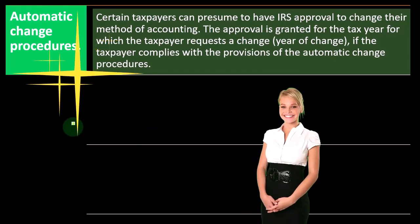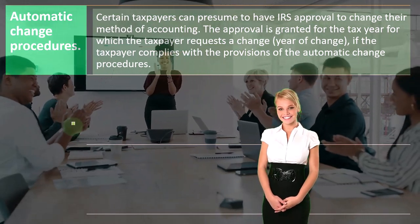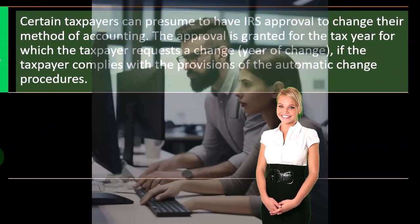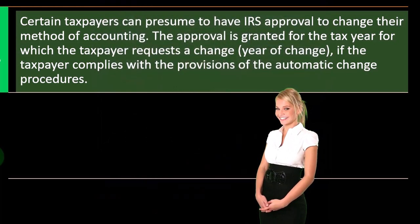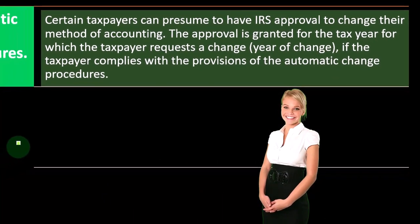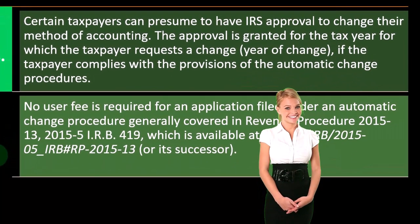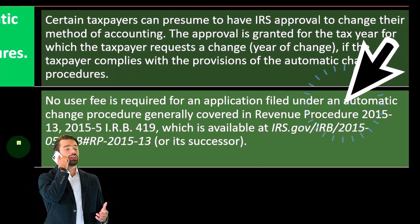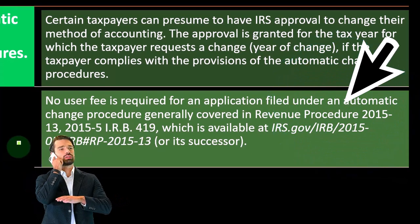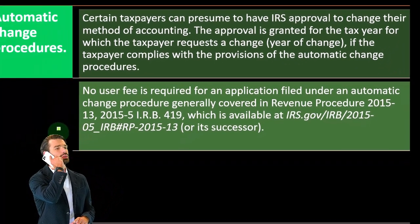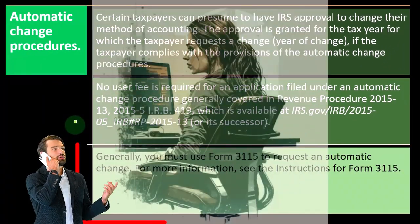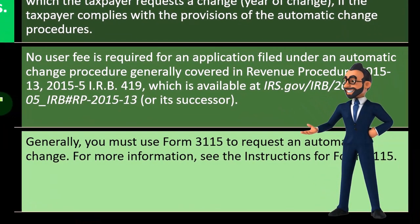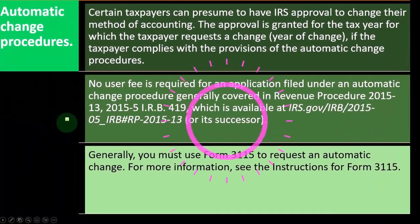For the automatic change procedures, certain taxpayers can presume to have IRS approval to change their method of accounting. The approval is granted for the tax year for which the taxpayer requests the change, if the taxpayer complies with the automatic change procedure provisions. No user fee is required, generally covered in Revenue Procedure 2015-13. You must use Form 3115 to request an automatic change.